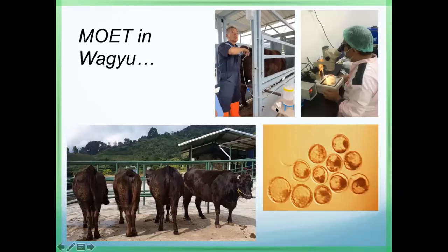Sometimes we get five embryos, sometimes we get ten, and once we got 24 embryos from a single donor.